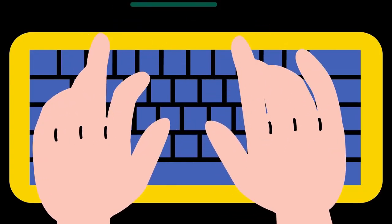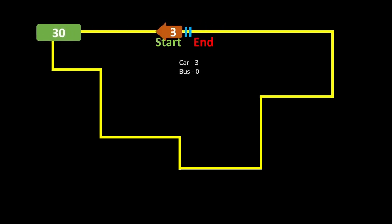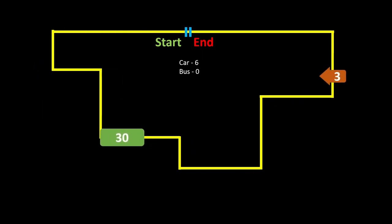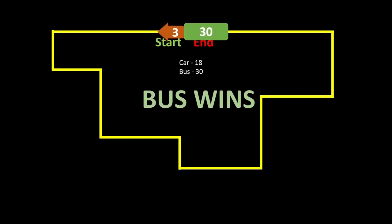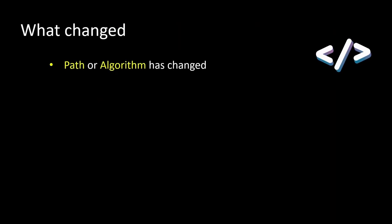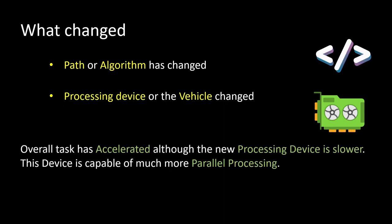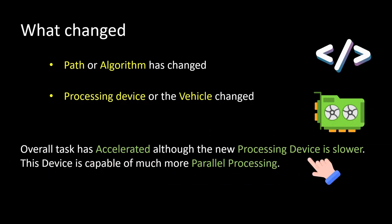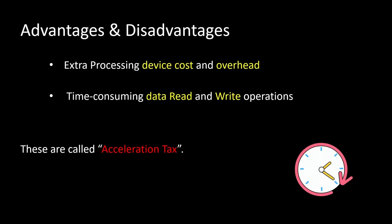Luckily our tour guide is a computer science student and he has learned about acceleration. So he decides to get a bus. The bus is slower than a car, but the bus can give 20 to 30 people a tour at the same time. So even though the bus is slower, one tour with the bus will cover 10 times what a car tour covers. His path may have slightly changed as not all roads allow the bus, so he has a slightly different algorithm now. Instead of using the car he moved to a different mode of transportation — the bus. So his processing device also changed, and his overall task of giving the tour has accelerated although the bus is essentially slower than the car. The bus takes more fuel to run, and onboarding 30 people takes much more time than just asking 3 people to sit in your car.